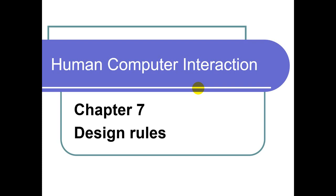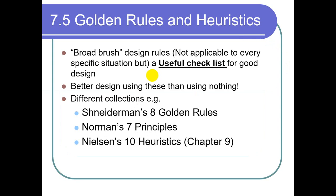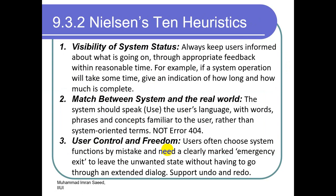We were studying design rules. So far we have studied Schneiderman's eight golden rules and Norman's seven principles. Today we will study Nielsen's ten heuristics. These ten heuristics describe how to design more usable software.